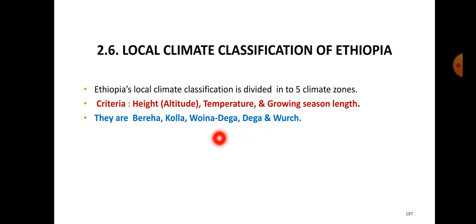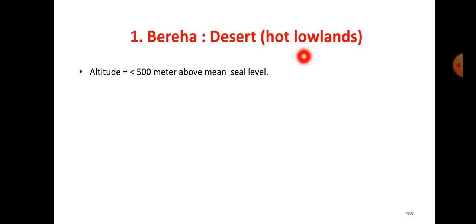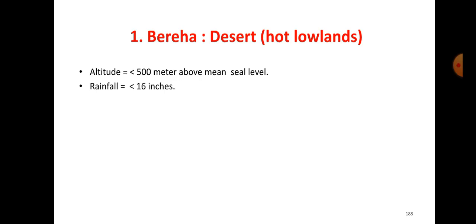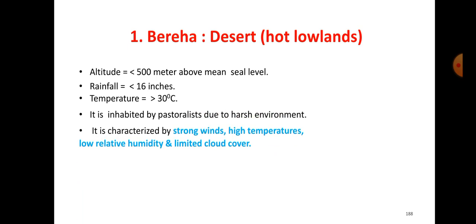There are Berha, Kolla, Weyna Daga, Daga, and Wurch climates in Ethiopia. Berha is called desert or hot lowlands. The altitude is less than 500 meters above sea level, rainfall is less than 16 inches, and temperature is greater than 30 degrees Celsius. It is inhabited by pastoralists due to the harsh environment.